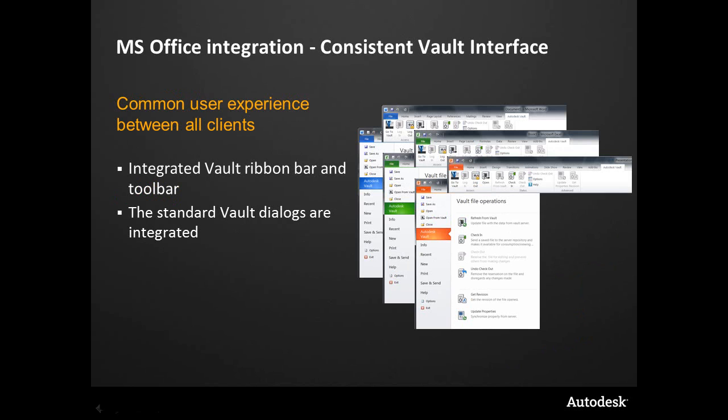The Microsoft Office integration has a representation in the ribbon inside of Office 2007 and 2010, and you'll see a consistent Vault interface. This allows you to work on a spec or a spreadsheet, save it into Vault, create a revision from time to time, and be able to go back to it. As you work through these file types, you can build history, copy it, and branch off in a different direction — the Vault dialog boxes are standardized, making it a common experience for all users.